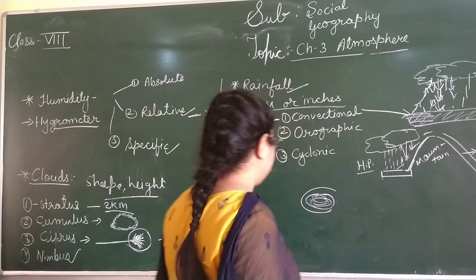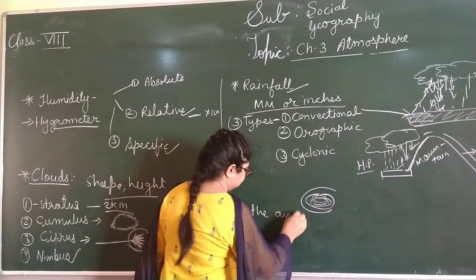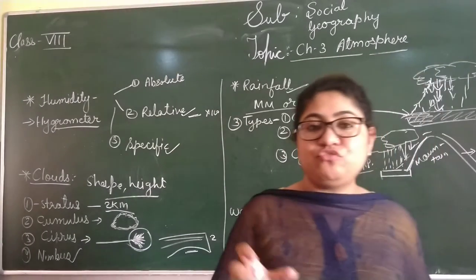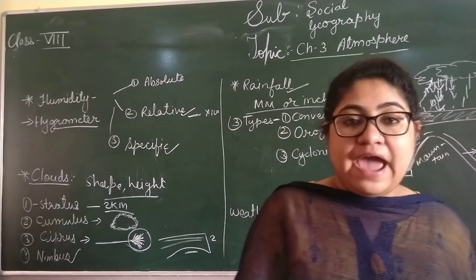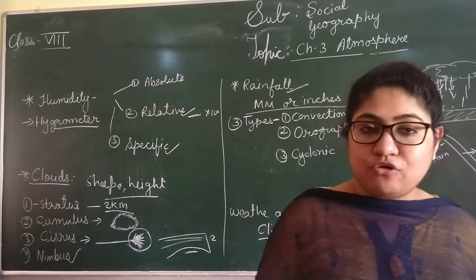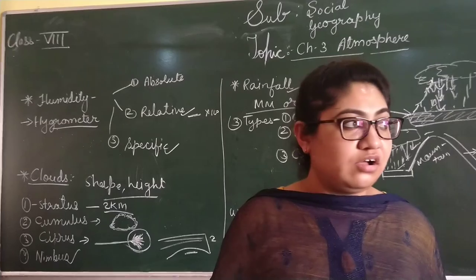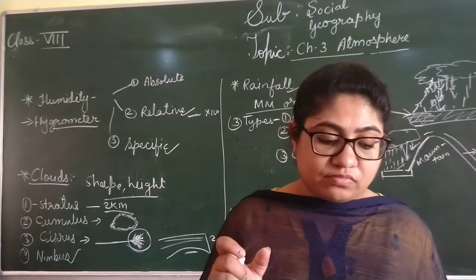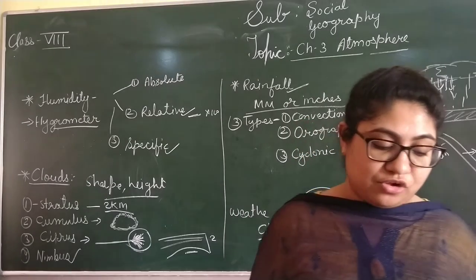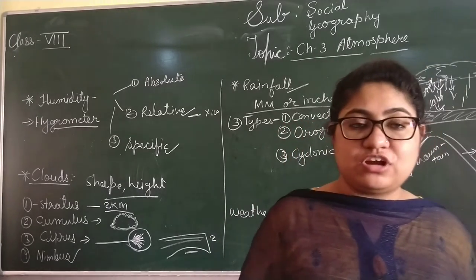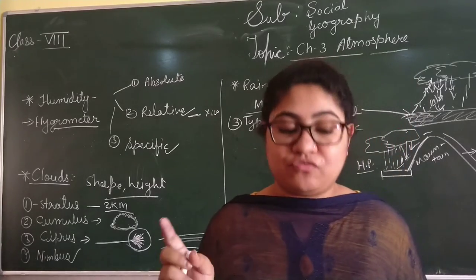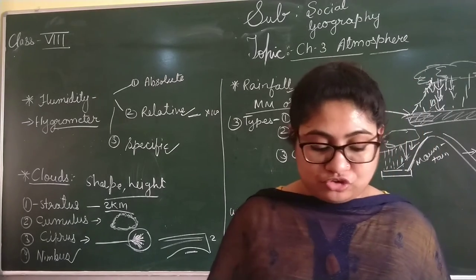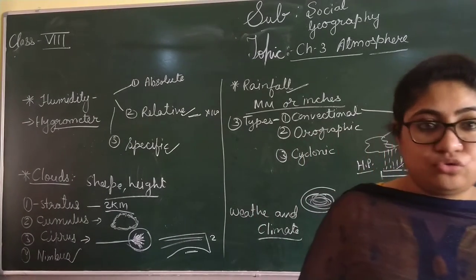Now we talk about weather and climate conditions. The atmospheric condition at a particular smaller area at a particular time is known as the weather — for example, cloudy, sunny, fine weather, slight winds. The scientific study of weather is called meteorology. Climate is the average condition of the atmosphere over a long period of time or a larger area — like equatorial climate, subtropical monsoon climate, polar climate, desert climate, Mediterranean climate, tundra climate.